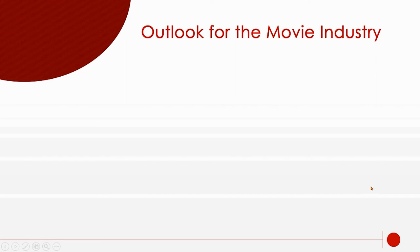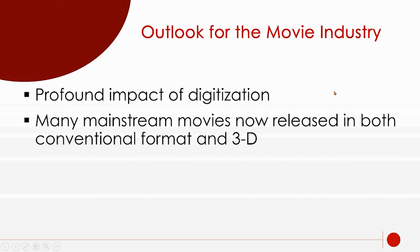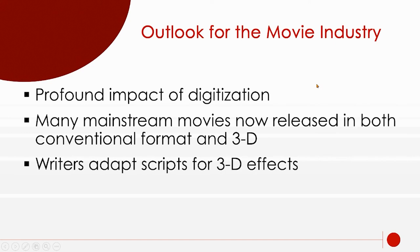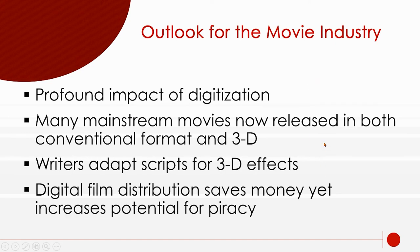The outlook for the movie industry: the profound impact of digitization means we're able to shoot and distribute movies for a lot cheaper. 3D and other formats have really changed things — 3D makes going to the theater different from watching at home, giving people a reason to go. Writers are adapting for different effects. Distribution saves a lot of money; it used to cost a lot just to make film prints, and now they can just have them on a digital format.